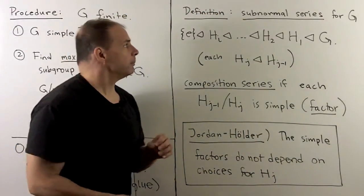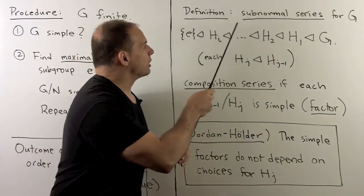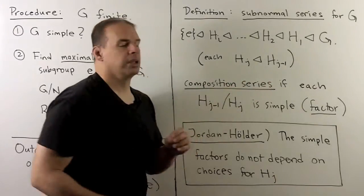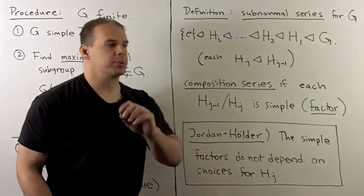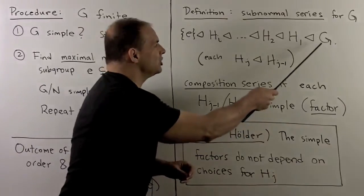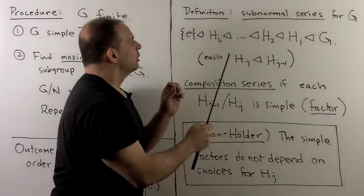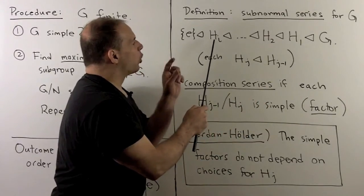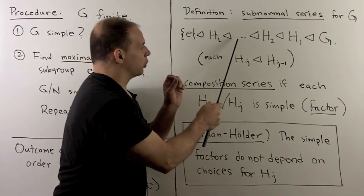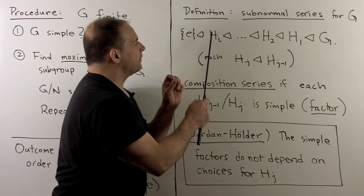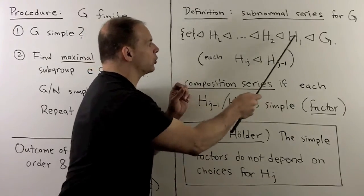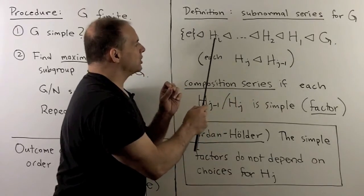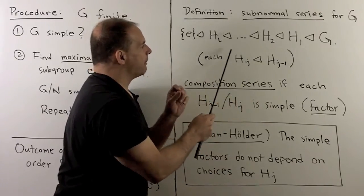Now, definition, we'll call a subnormal series for G. This is going to be a chain of subgroups, starting with the identity, ending at G. Each subgroup is going to be normal in the successive subgroup. So I don't have to have this H sub I normal in G or H1 or H2. I just want H sub I normal in H sub I minus one.